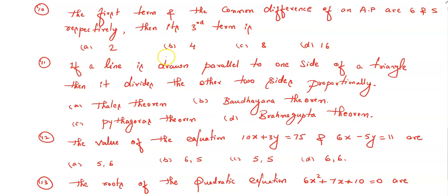Question number eleven: if a line is drawn parallel to one side of a triangle, then it divides the other two sides proportionally. This is: option a) Thales theorem, option b) Baudhayana theorem, option c) Pythagoras theorem, option d) Brahmagupta theorem. Which among these four theorems does the given statement represent?